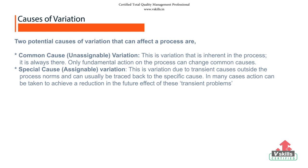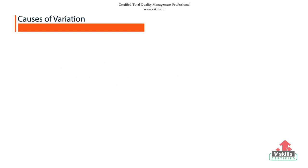Special cause variation is a variation due to transient causes outside the process and can usually be traced back to a specific cause. In the journey to work example, this would include roadworks, breakdowns, etc. In many cases, action can be taken to achieve a reduction in the future effect of these transient problems — for example, better maintenance to avoid breakdowns — which does not fundamentally change the process.